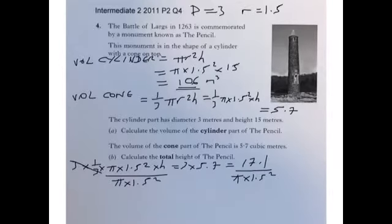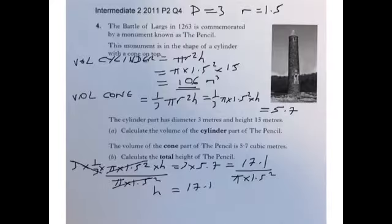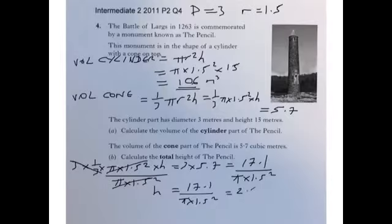We're left with h equals 17.1 over pi times 1.5 squared. We get an answer of 2.419, which we could just round to 2.4 metres for the height of the cone.